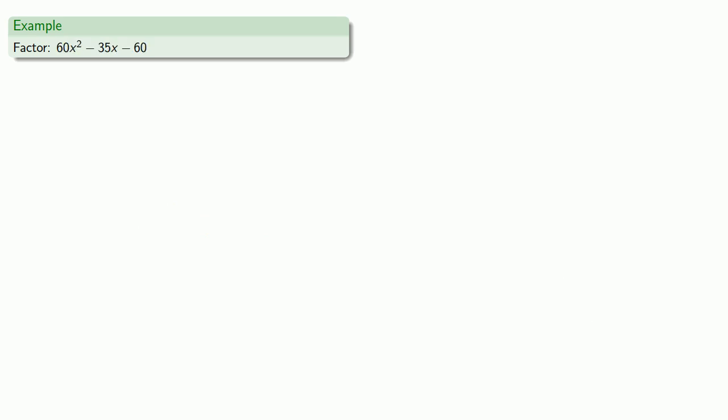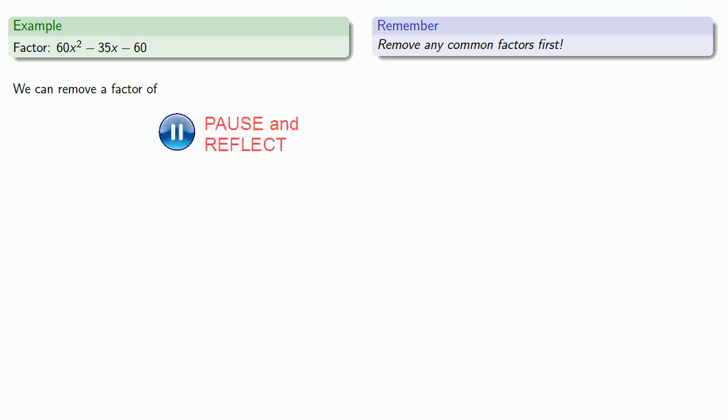So let's try to factor something much more horrifying: 60x² - 35x - 60. So a useful idea to remember is to remove any common factors first. And if we look, we see that we can remove a common factor of 5. So let's factor that 5 out: 5(12x² - 7x - 12).